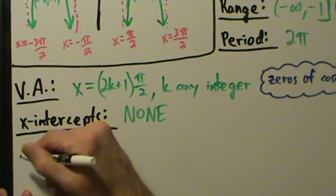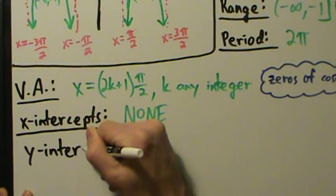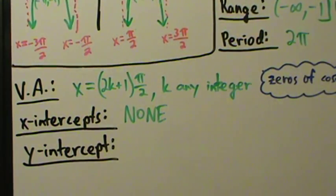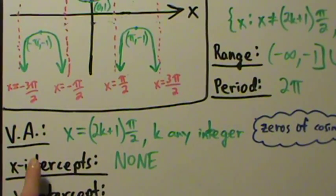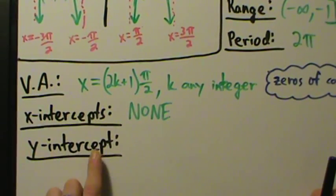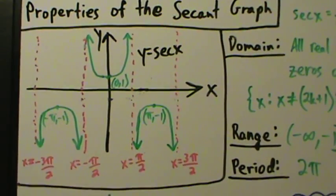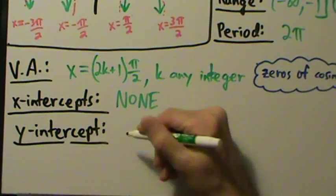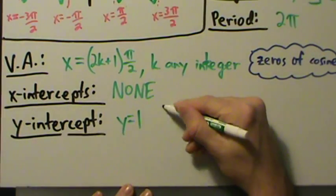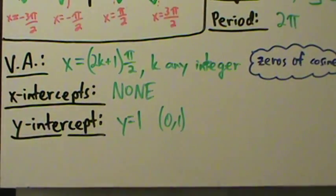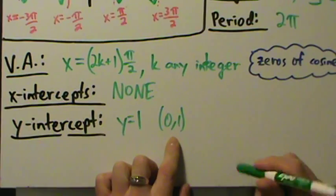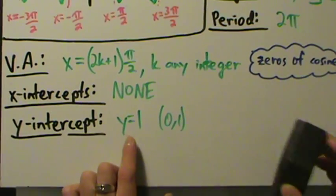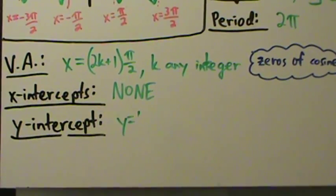Functions can only have at most one y-intercept. A y-intercept is a point where the graph is on the y-axis. Looking at the graph, yes — we're on the y-axis at (0, 1). So the y-intercept is (0, 1), or equivalently y = 1. It's understood that at a y-intercept x = 0.